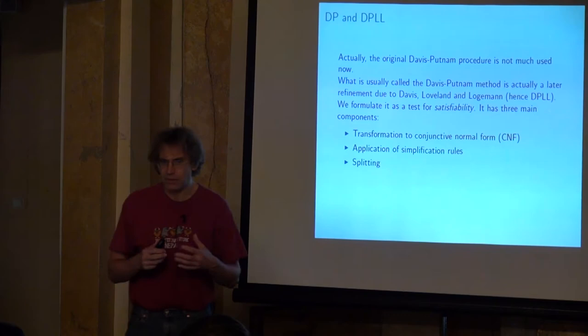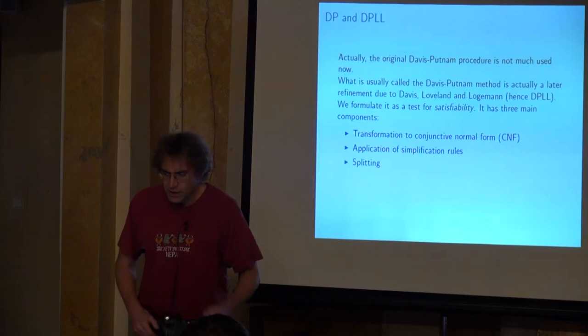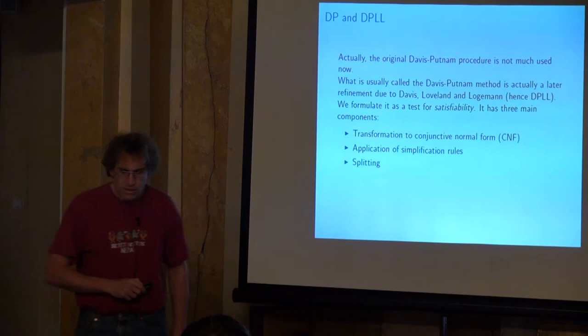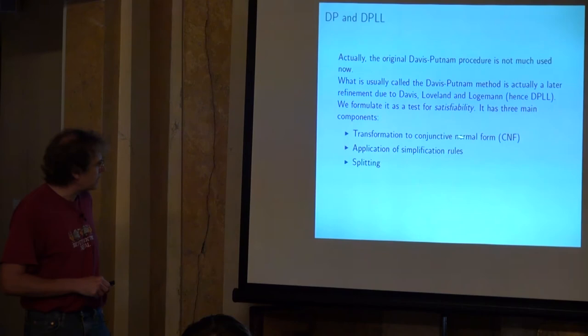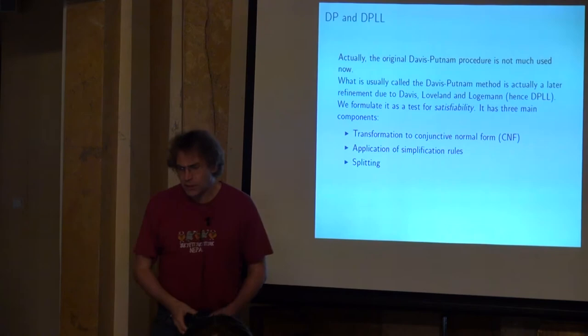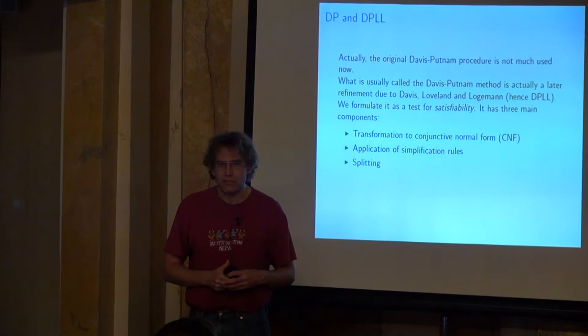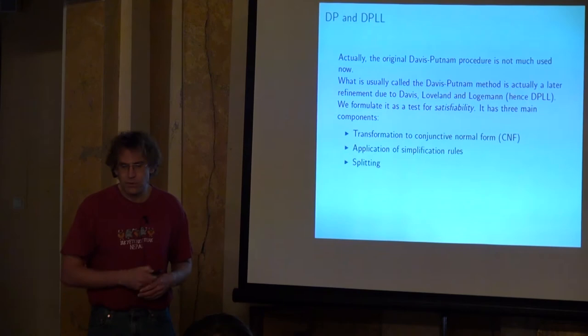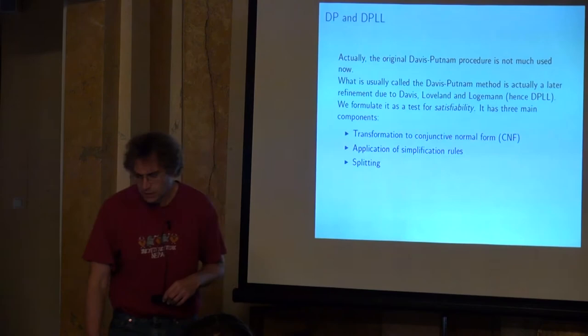The DPLL algorithm can be formulated as a test for satisfiability. It has three main components: first, transform the formula to conjunctive normal form; second, apply various simplification rules; third, perform case splitting. Even though people call these algorithms DPLL, the modern variants look quite different from the original, so I'll go through the original DPLL and then talk briefly about how modern implementations differ.